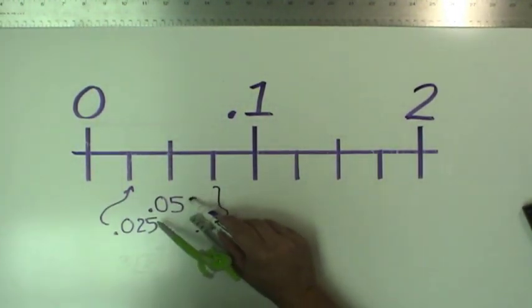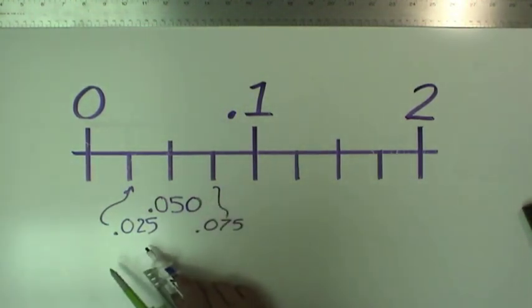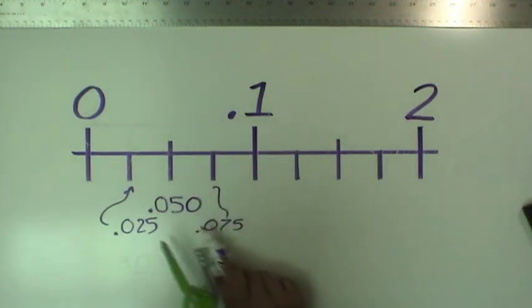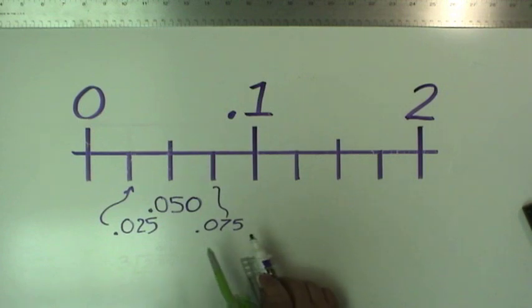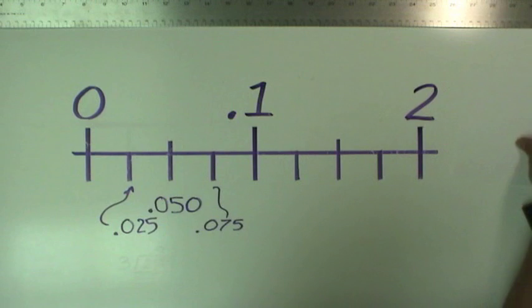If I go ahead and draw an extra zero on there, it makes a little bit more sense. This is 25, 50, and 75. So as these tick off, I'm going to remember to count by 25 for each mark.